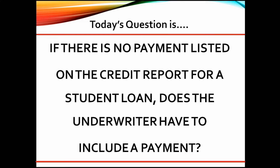We must be able to show that over the life of the loan, the borrower will be able to afford the payment in addition to the other debts and the mortgage. For a conventional loan, use 1% of the loan balance for Fannie Mae or 0.5% of the highest loan balance for Freddie Mac. Always be sure to double-check your guidelines for the rules on student loan payments.